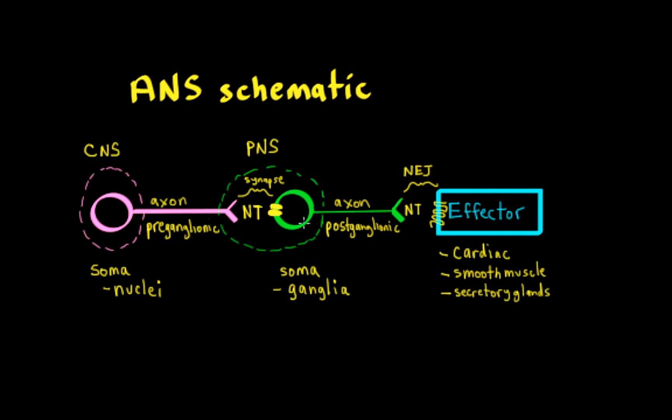Now that's going to excite the postganglionic neuron. It's going to fire an action potential, send it down the axon to the nerve terminal through an increased influx of calcium, increased release of a neurotransmitter from a vesicle onto what we call an effector organ.